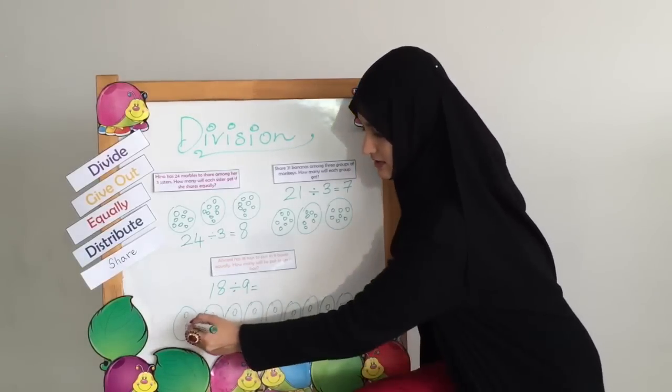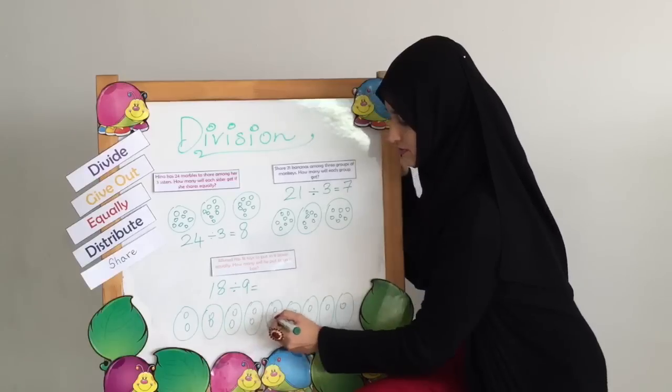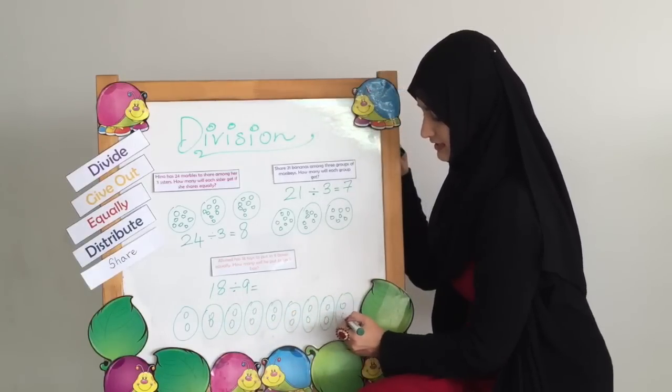That's nine, ten, eleven, twelve, thirteen, fourteen, fifteen, sixteen, seventeen, eighteen.